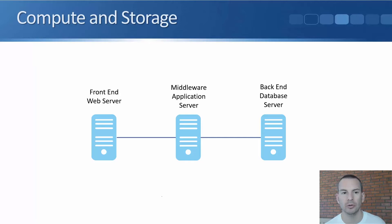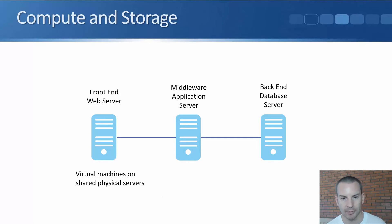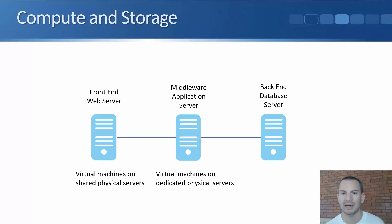The first thing to consider is what are we going to do for compute and storage? We need to figure out which of the three flavors of IaaS to use for the different types of servers. Our front-end web servers are going to be pretty low-end — I don't need a lot of power there, and I don't have any compliance requirements. So I'm going to go for virtual machines on shared physical servers because that's the most cost-effective option. For the middleware application server, let's say we have a compliance requirement where we can't run those servers on shared underlying physical compute infrastructure, so we're going to need to put those on dedicated servers — virtual machines on dedicated physical servers.